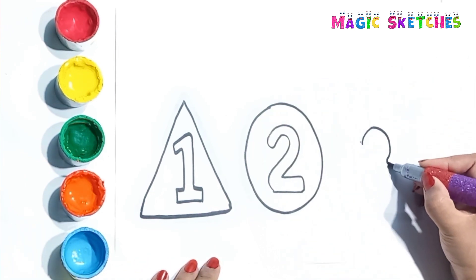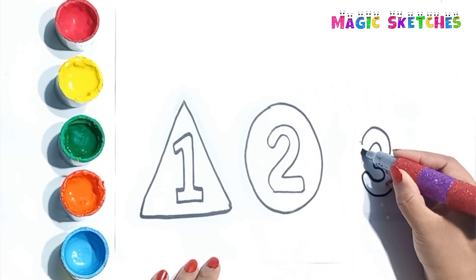And I am drawing a square. Let's draw number 3 in it. It's a square.